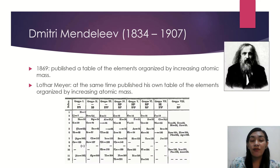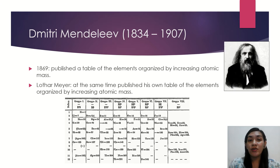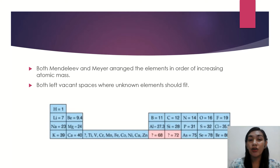Next, we have Dmitri Mendeleev, who was actually known as the father of the modern periodic table. He published a table of the elements organized by increasing atomic mass — this is the original periodic table by Mendeleev. He had a contemporary, Lothar Meyer, who at the same time published his own table of elements organized by increasing atomic mass. Both Mendeleev and Meyer arranged the elements in order of increasing atomic mass and left vacant spaces where unknown elements should fit.